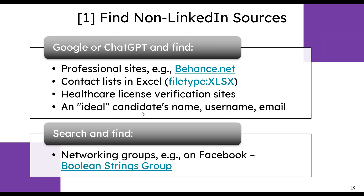How do we find non-LinkedIn sources? You can Google or ChatGPT to find professional sites. For example, for designers, Behance.net is a great site. For software engineers, GitHub — and I'll talk about that. Or you can find contact lists in Excel. If it's a healthcare license verification site, it's your friend, because it will have all the names of people with licenses. Or you can search for an ideal candidate and land on pages where there are others like them — could be another list or list of members of something. And then on networking sites like LinkedIn or Facebook, you can find networking groups and look at lists of their members.